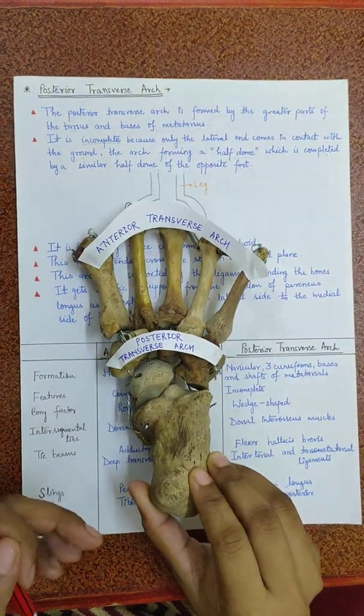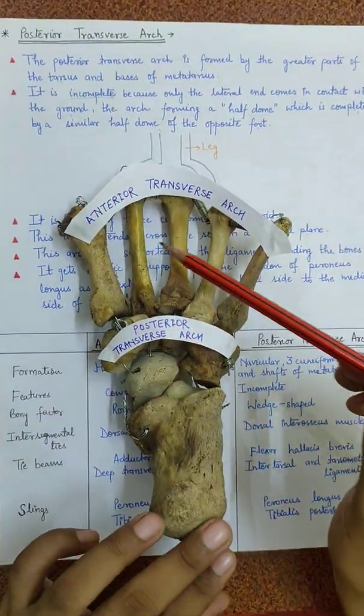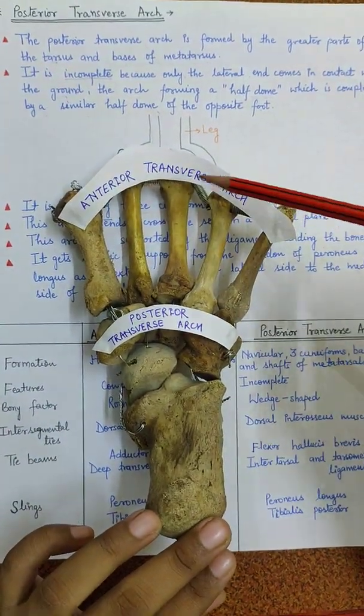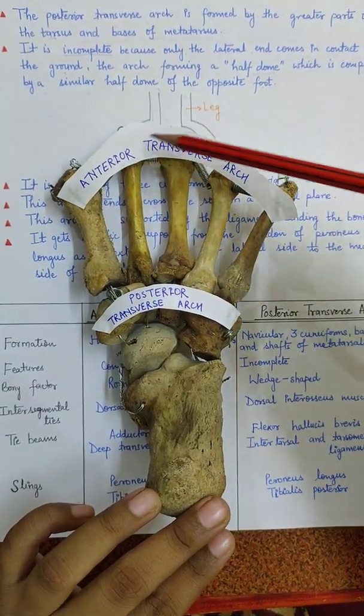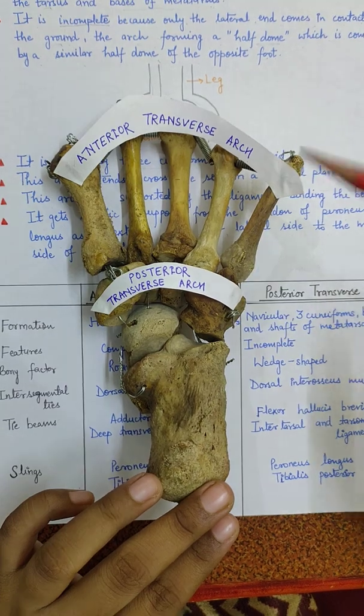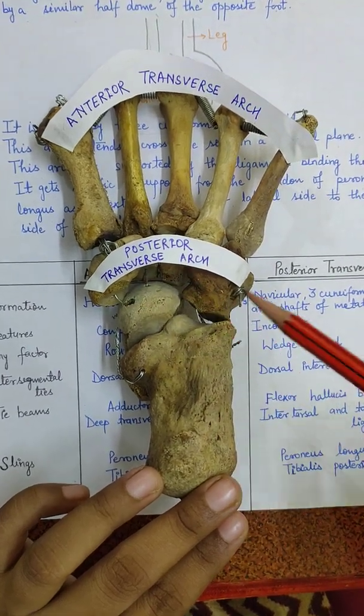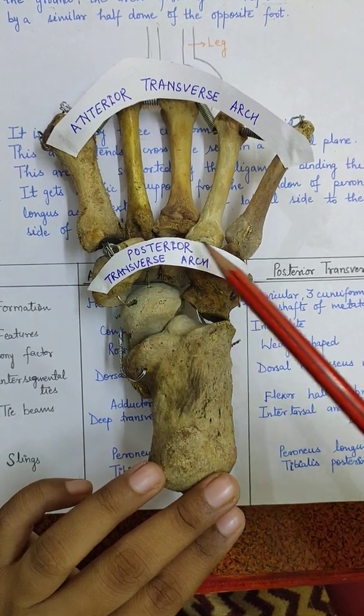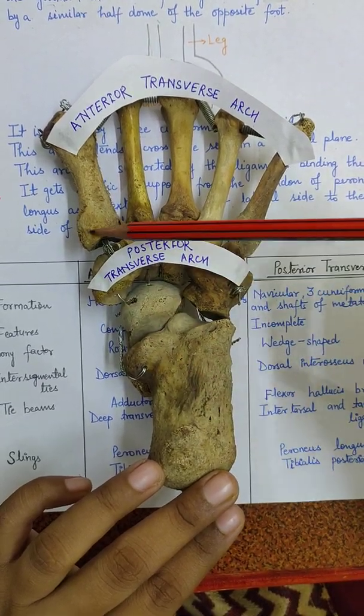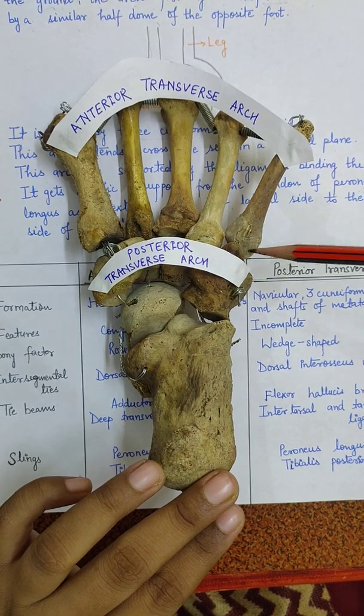Here in the bone we can see this is the metatarsal and these are the heads of the metatarsal and they are adjoined to form the anterior transverse arch. These are the three cuniforms and the cuboid and some part of navicular and they together form the posterior transverse arch along with the basis of the five metatarsals.